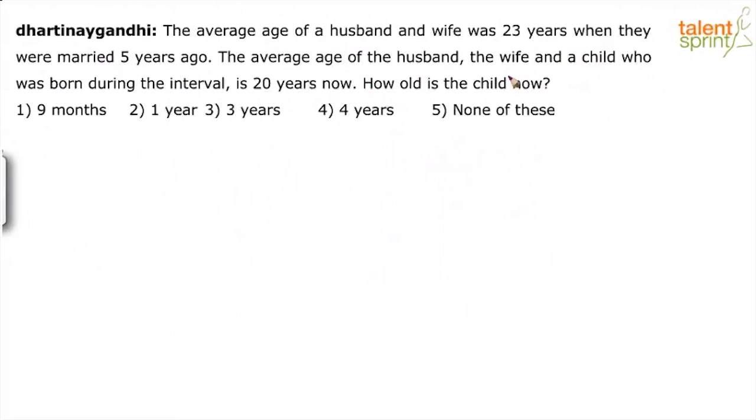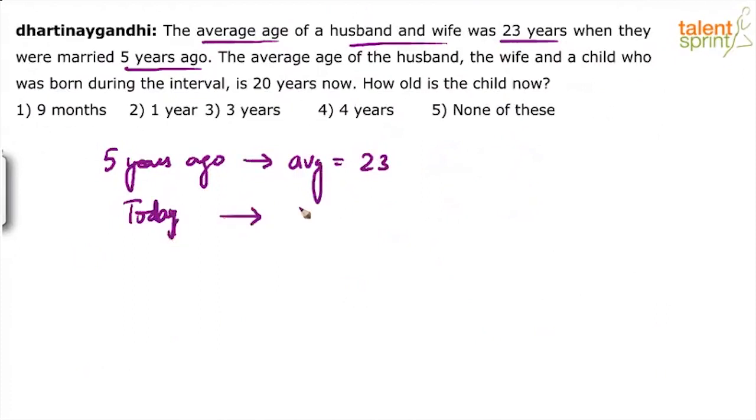The average age of a husband and wife was 23 years when they were married 5 years ago. Five years ago, average was 23. Today, what will be the average? Average will be 23 plus 5. This is a very important concept. And if you apply it at the right time, like in this situation, you would save a lot of your time.